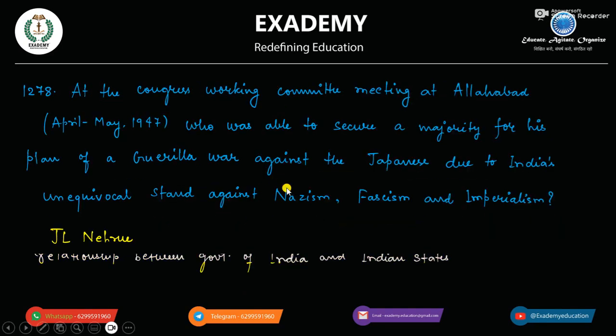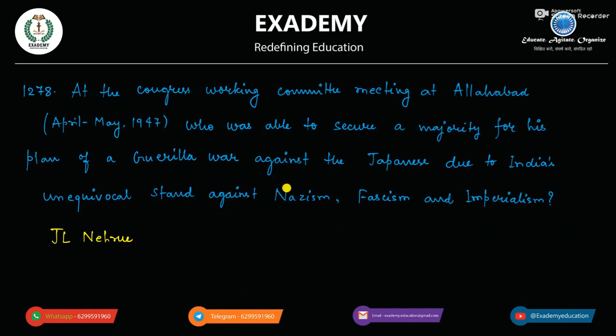Hello and welcome back. At the Congress Working Committee meeting at Allahabad, April–May 1947, who was able to secure a majority for his plan of a guerrilla war against the Japanese, due to India's unequivocal stand against Nazism, Fascism and Imperialism? Jawaharlal Nehru.